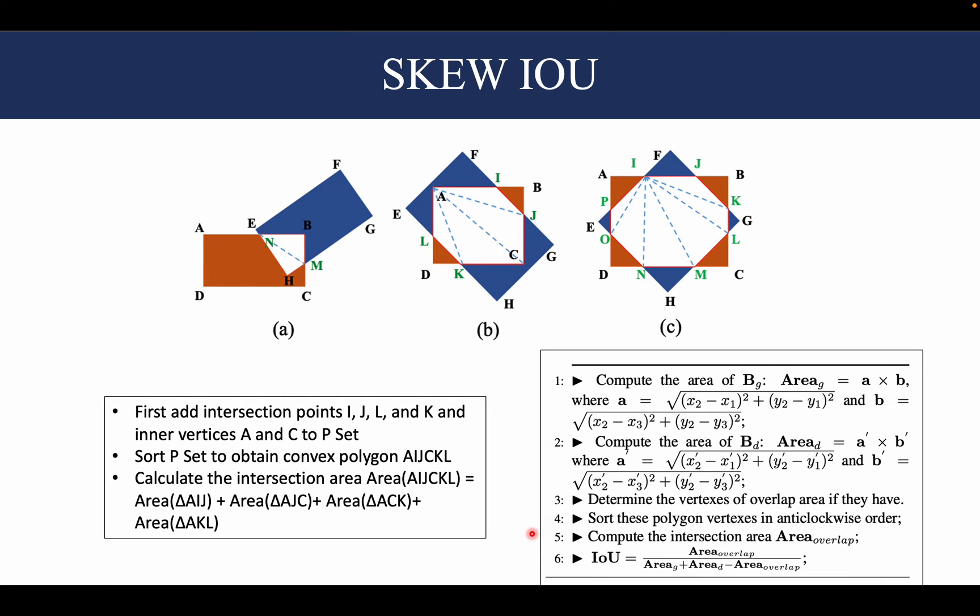The problems with SKEW IOU are, first of all, it is computationally expensive because of this elaborate algorithm and the various permutations and combinations in which two rotated bounding boxes overlap. The second problem is it is not differentiable for learning because the back propagation algorithm has not been implemented in various popular deep learning frameworks like PyTorch and TensorFlow.